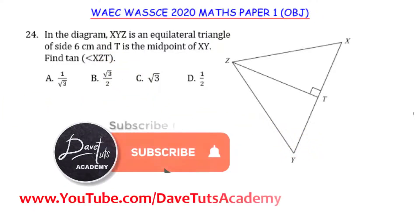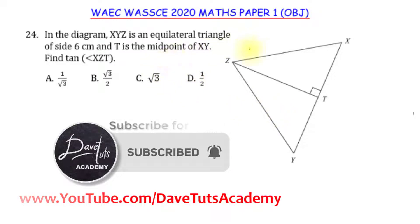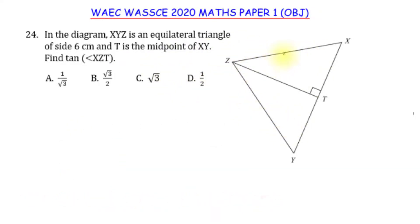Let's identify all the information we are given. First, we are told that this triangle is equilateral, meaning that all three sides are equal. We are also told that T is the midpoint of XY.